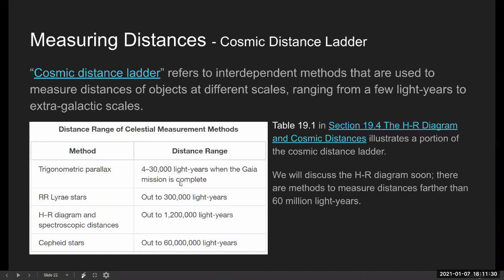When the Gaia mission is complete, they hope they can measure out to 30,000 light years. Before Gaia mission, which was launched in 2015, it was only out to like 300 light years. But this parallax measurement is important because it anchors other methods.